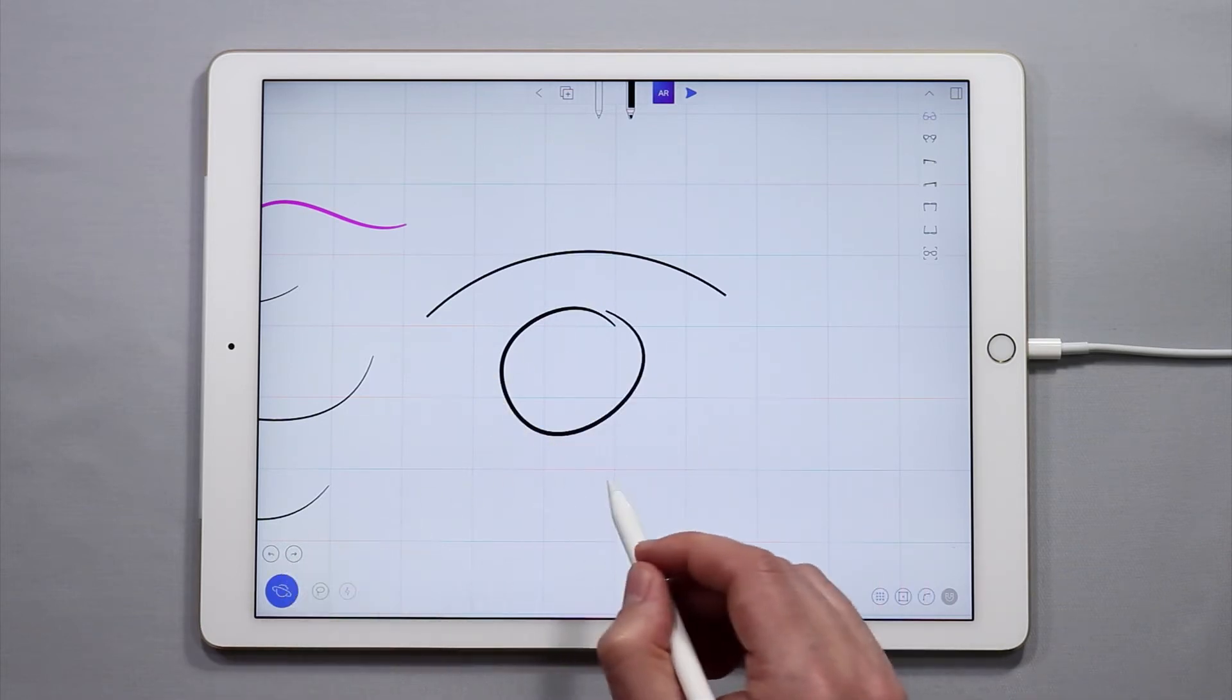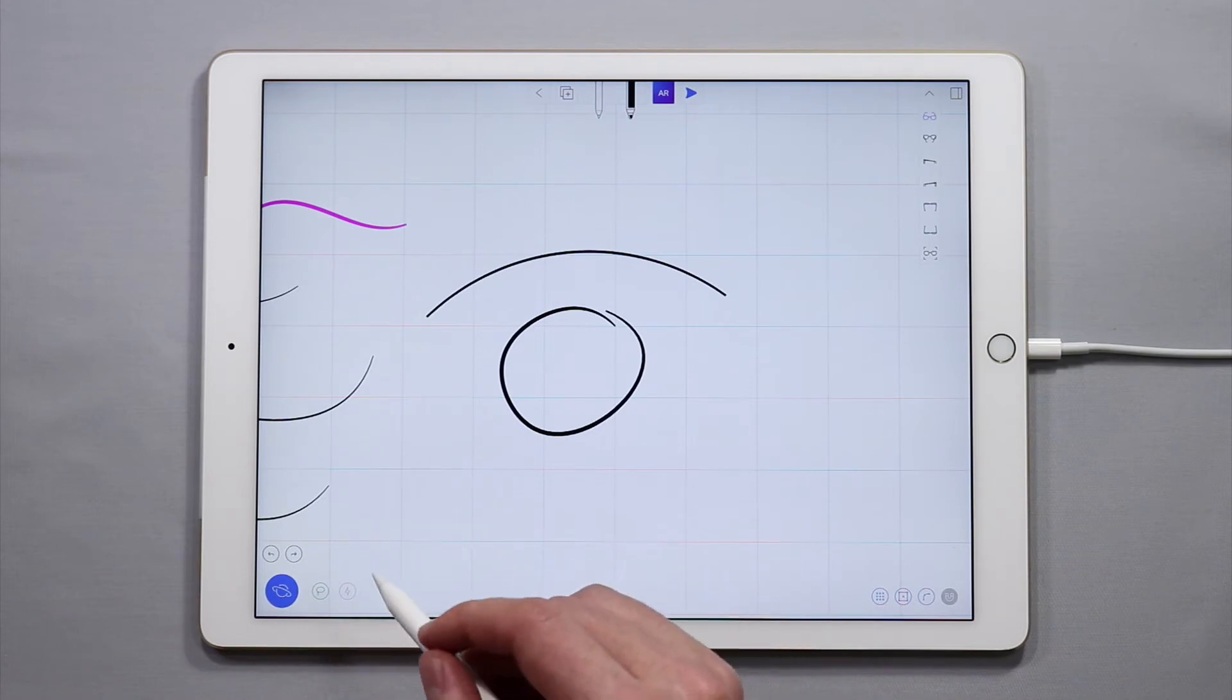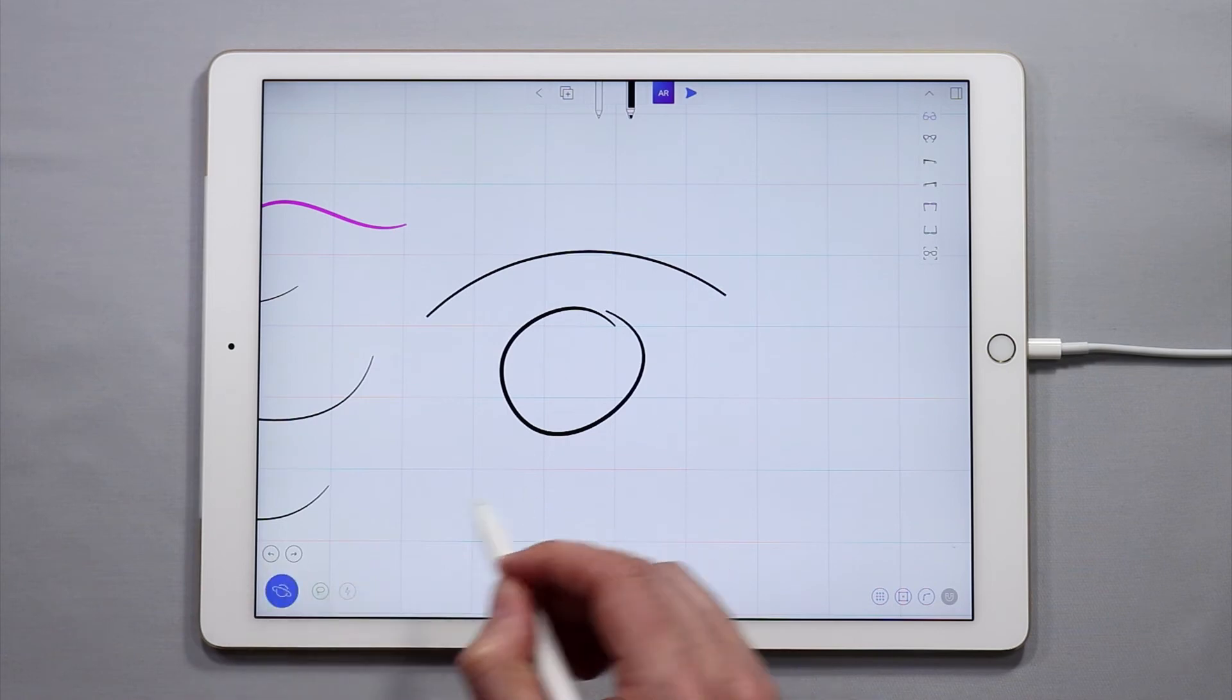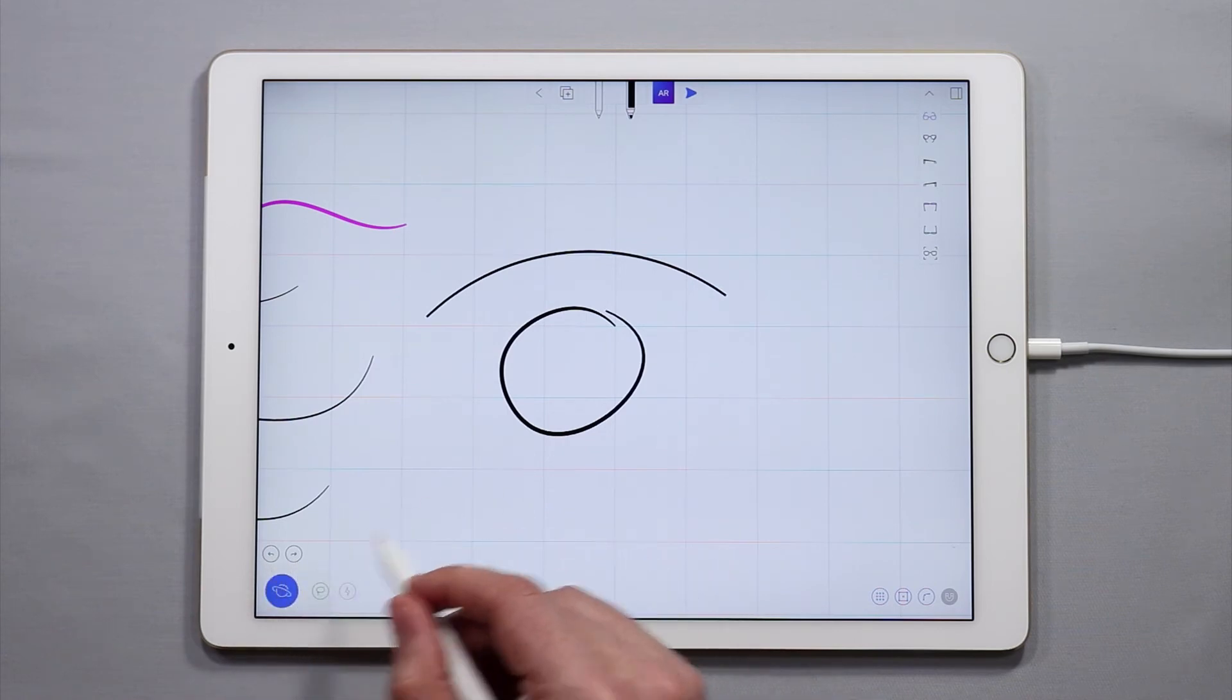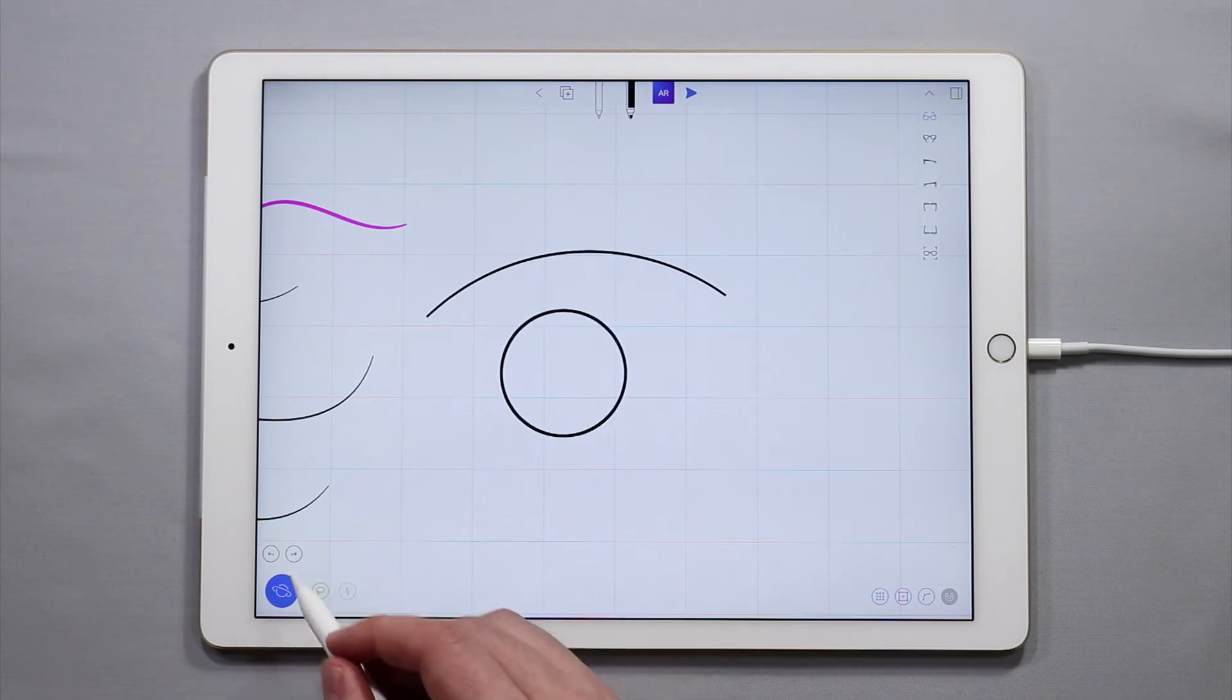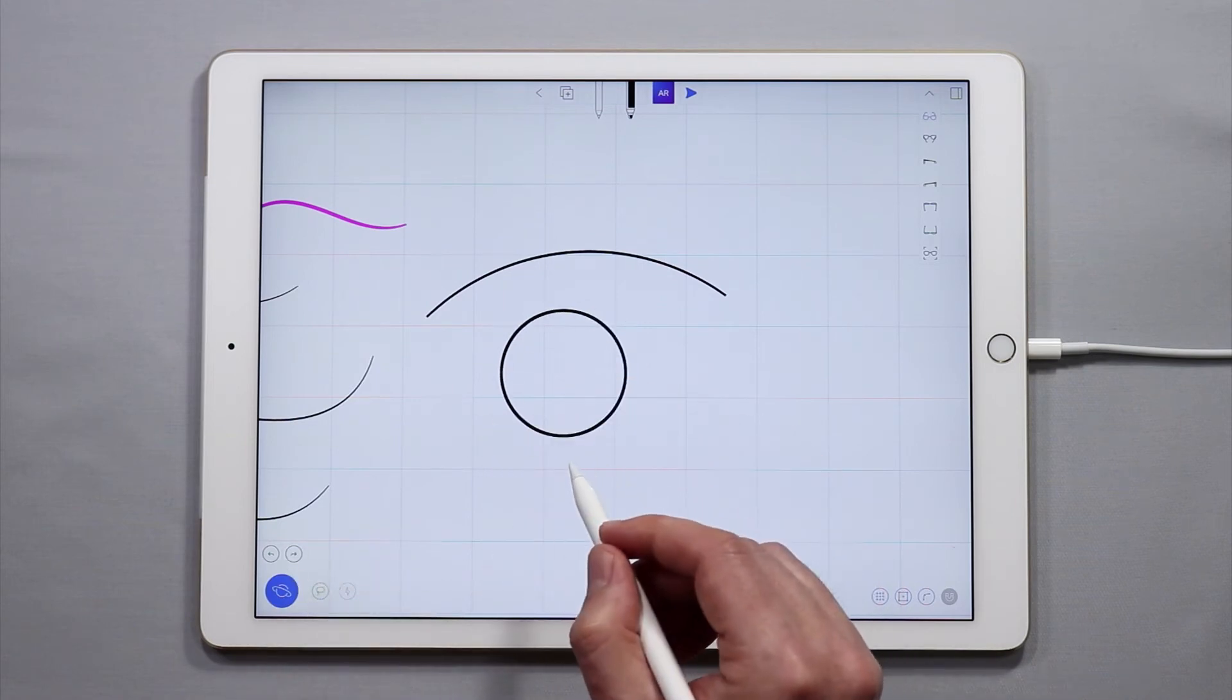Sometimes this can be helpful because you may assume that you're trying to draw something that you're actually not. So simply tapping undo once will return it to the shape that you intended to draw. Now if I did want the perfect circle, I can tap the redo function and I can get my circle back.